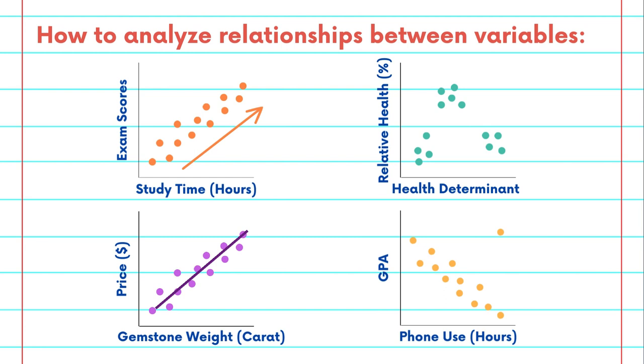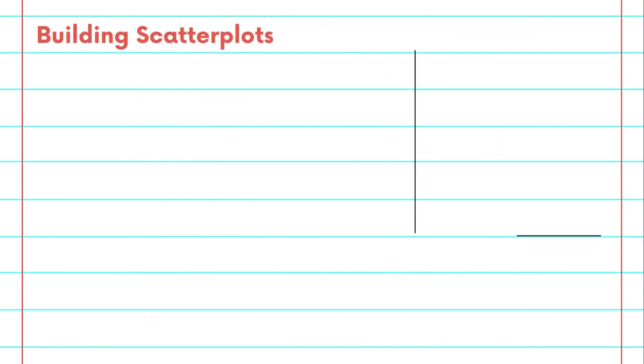Scatterplots also help you identify outliers, the data points that stand apart from the rest. These anomalies can be crucial in various fields from fraud detection to quality control.